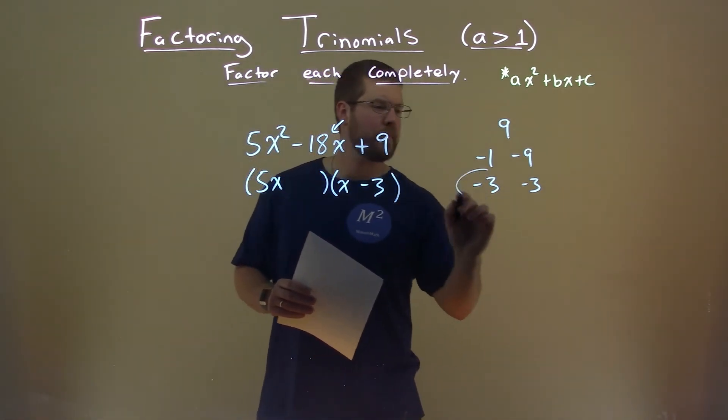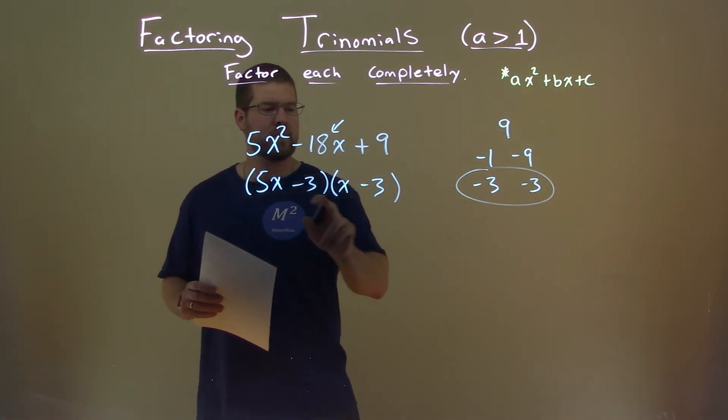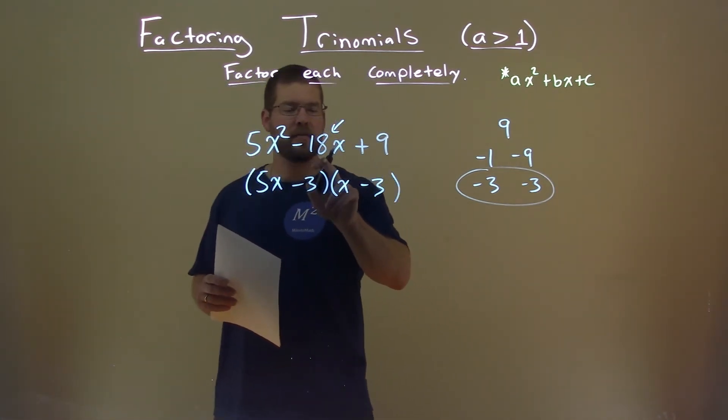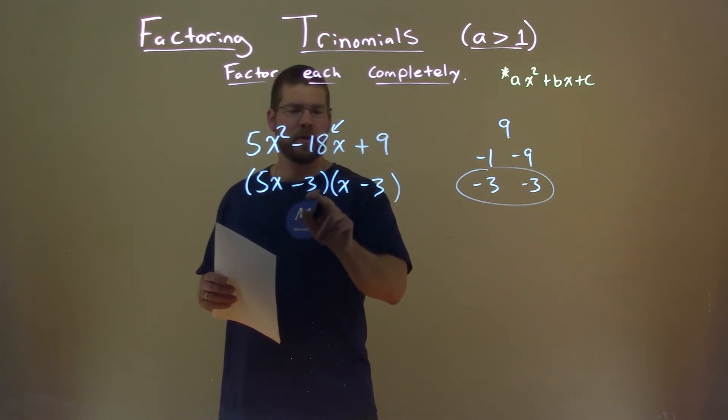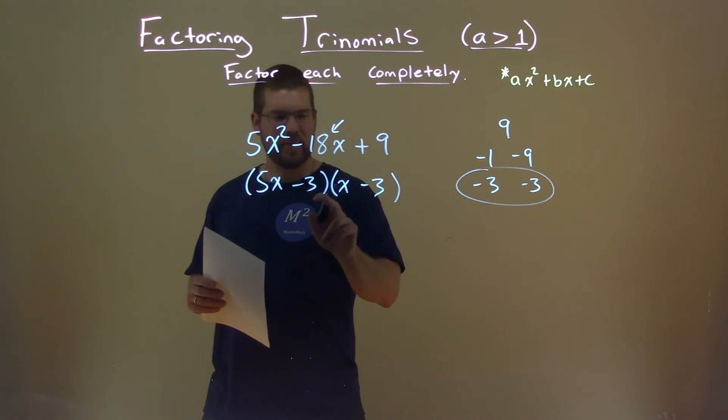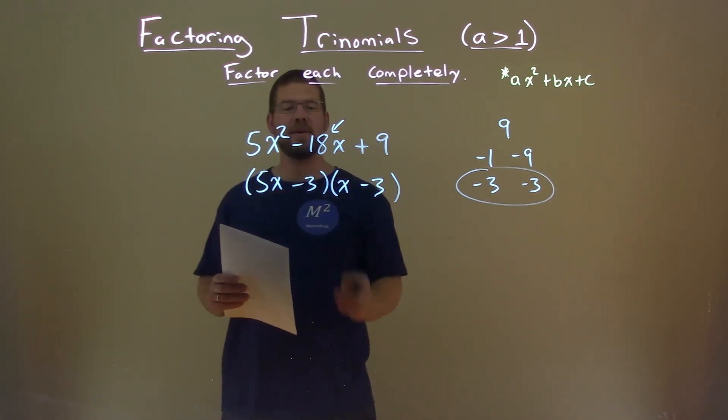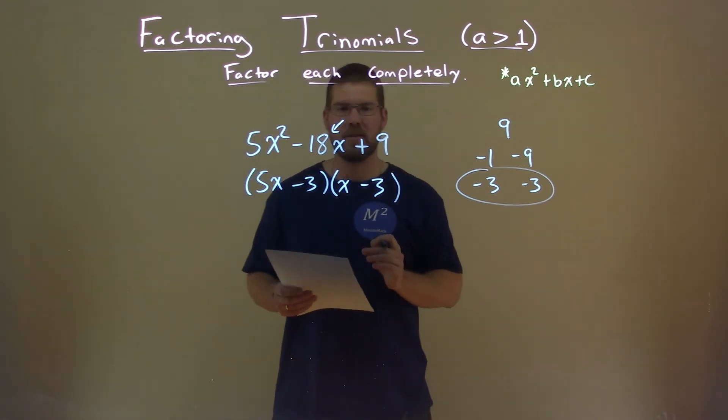So minus 3 here and minus 3 there, and we can see. 5x times negative 3 is negative 15x, plus negative 3 times x is negative 3x, which gives us negative 18x. And there we have our final answer: 5x minus 3 times x minus 3.